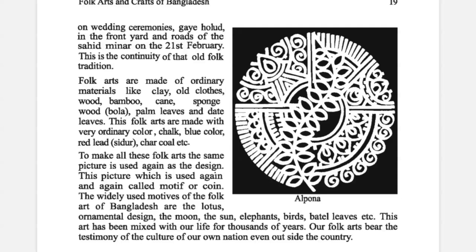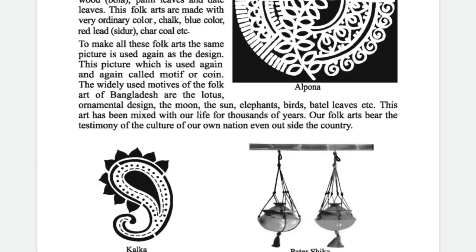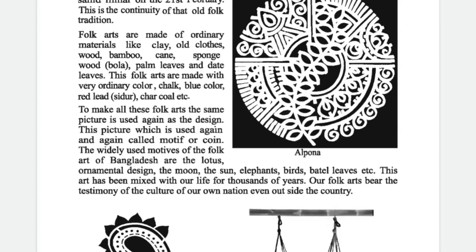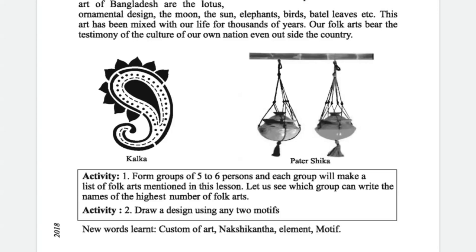Those folk arts are made with very ordinary colors — blue color, red color, charcoal, etc. In this space we have two pictures: the first one is Kolka and the second one is Patir Shika. Kolka is a kind of motif which can be used in alpona and can also represent by itself. There is also a picture of a very beautiful alpona with black background and white color. Patir Shika is made of jute.